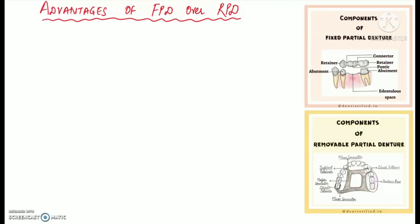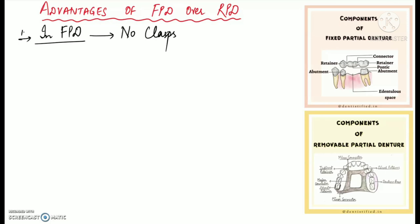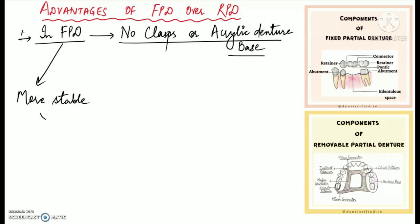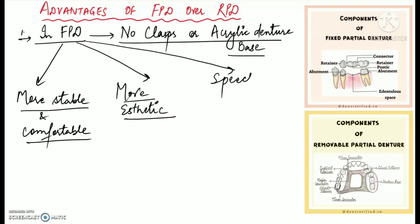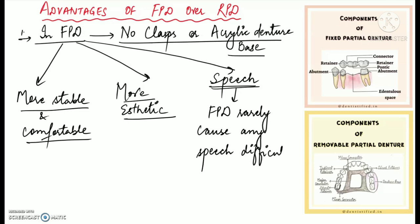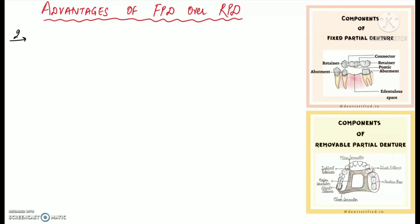Now we'll talk about the advantages of fixed partial dentures over removable partial dentures. In FPD, there are no clasps or acrylic base, which makes it more stable and comfortable for the patient compared to RPD, which is more bulky due to the presence of clasps and acrylic denture base. FPD is also more aesthetic than RPD because it does not contain clasps or acrylic denture base. Regarding speech, FPD rarely causes any difficulty since the size of the pontic is almost similar to that of the teeth being replaced, whereas removable partial dentures, being bulky, may induce difficulty in speech. Also, the acrylic in removable partial dentures may sometimes result in gingival irritation, whereas FPD does not irritate or apply any pressure on the tissues.